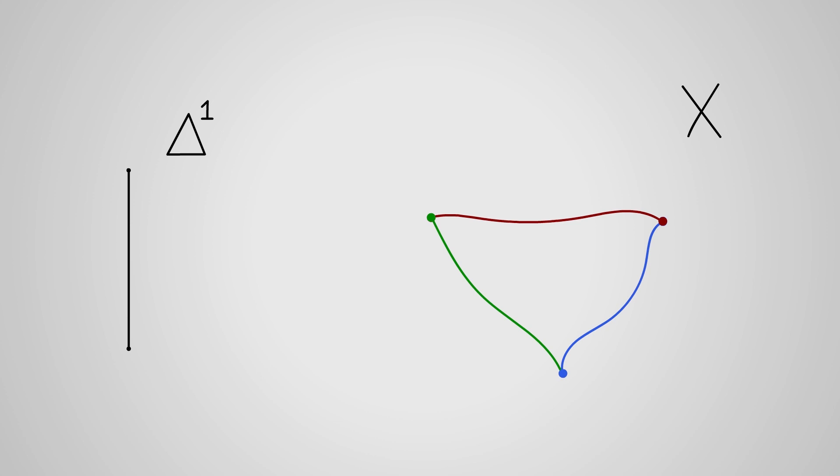Then we get something that looks like, or at least looks like it could be, the boundary of a two simplex. So we can ask the question, is it? More precisely, is there a continuous function from the standard two simplex delta two into x, such that the boundary of delta two is mapped onto our three squiggly line segments? Can we fill in the space enclosed by our lines?